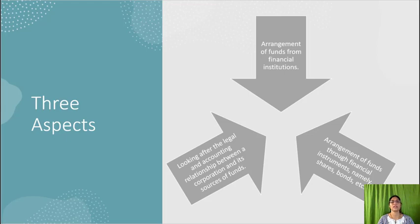So the three aspects of financial management under the traditional approach are: getting the funds, arrangement of funds from institutions through instruments, and the legal and accounting aspects of the funds.